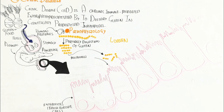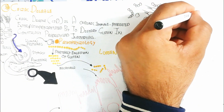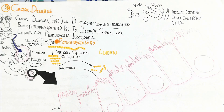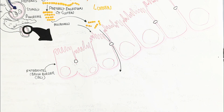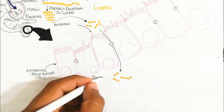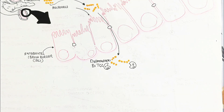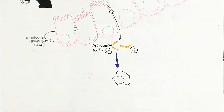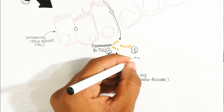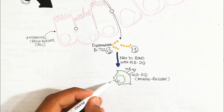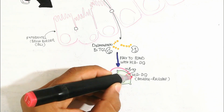This partially digested gluten enters the enterocyte directly or indirectly. The microbiome acts as a barrier immunity to prevent entry into the lamina propria. However, gluten passes into the lamina propria, where it is deaminated by the tissue transglutaminase-2 (tTG2) enzyme, converting gluten into gliadin. This gliadin binds to HLA-DQ2 and DQ8 molecules, which due to genetic or epigenetic mutation leads to activation.